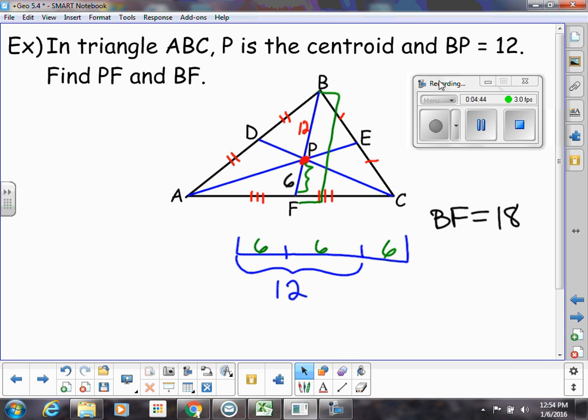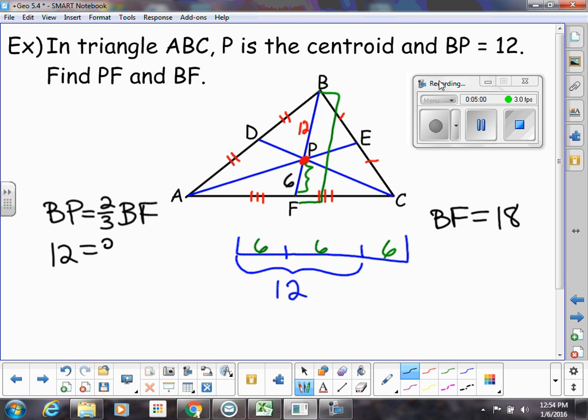Now, you can also do this by setting up an equation. So you could say BP, just like we said on the previous page, BP is two-thirds of BF, the whole unit. And then plug in what you know. So BP is 12. We don't know what BF is. That's something we're trying to find. So to solve this equation, we would divide by two-thirds or multiply by the reciprocal. So the fractions would cancel out. And BF would be equal to three halves of 12. So that would be 36 divided by two, which is 18.